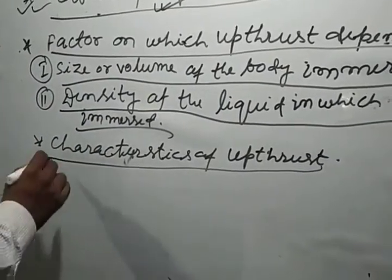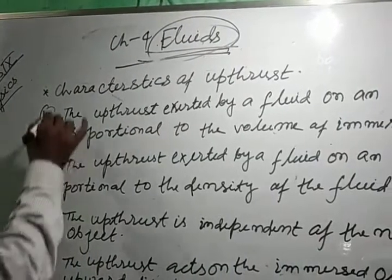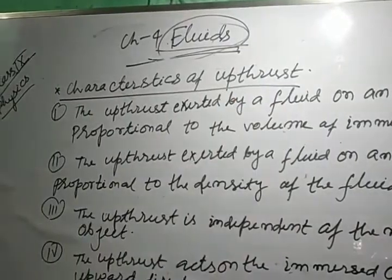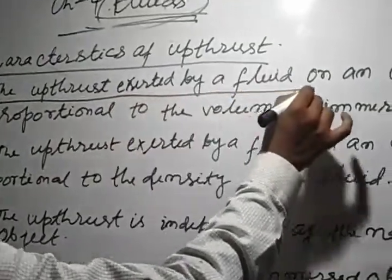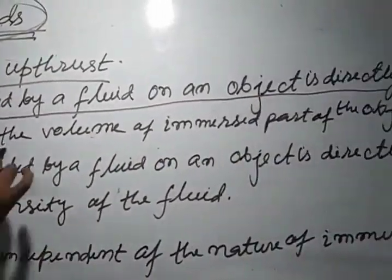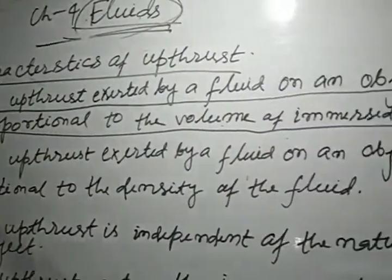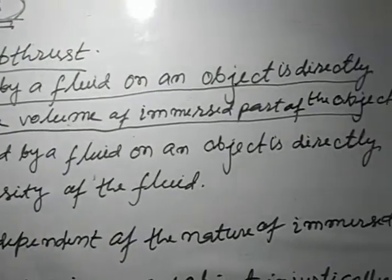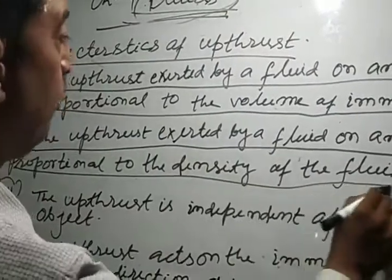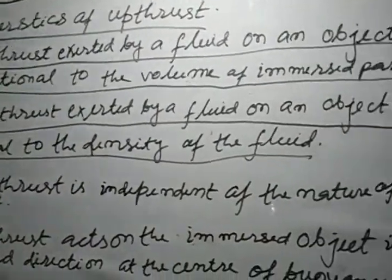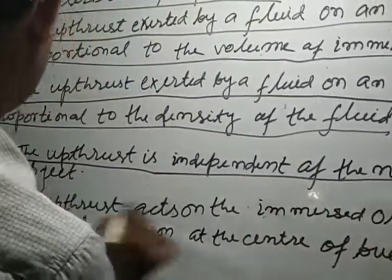Now we will study the characteristics of upthrust. The 1st characteristic: the upthrust exerted by a fluid on an object is directly proportional to the volume of the immersed part of the object. The 2nd characteristic: the upthrust exerted by a fluid on an object is directly proportional to the density of the fluid. The 3rd characteristic: the upthrust is independent of the nature of the immersed object.